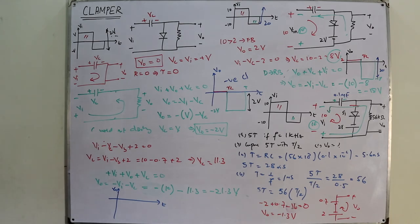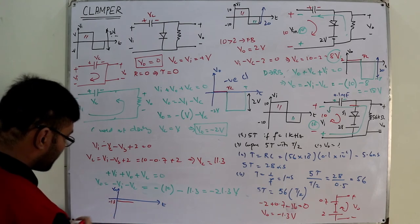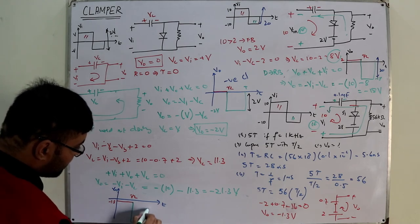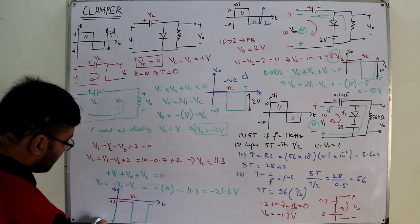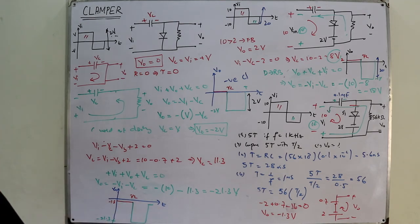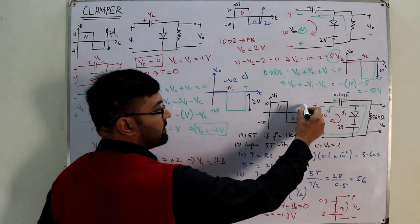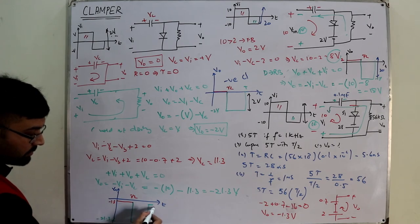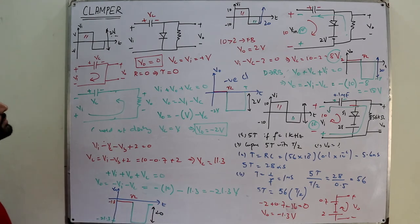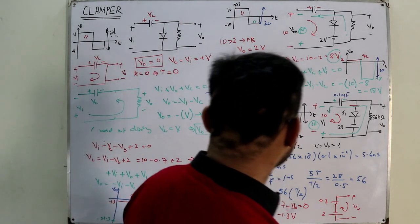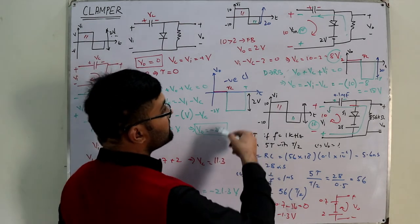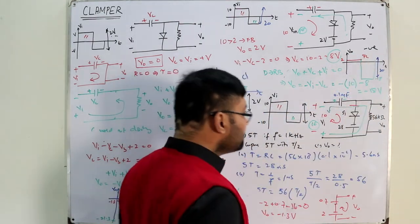For the red color, output is negative 1.3 till T/2. Then for the positive cycle it is negative 21.3. Check the swing: 1.3 and 21.3 — minus 1.3 and the overall swing is 20 volts, matching the input swing of 10 and 10 making 20. It has been shifted downwards — so this is a negative clamper. Similarly the previous biased example was also negative and shifted downward.